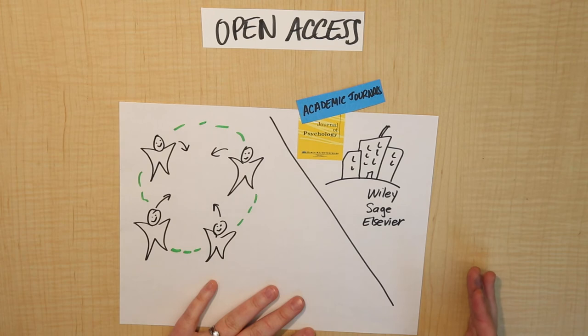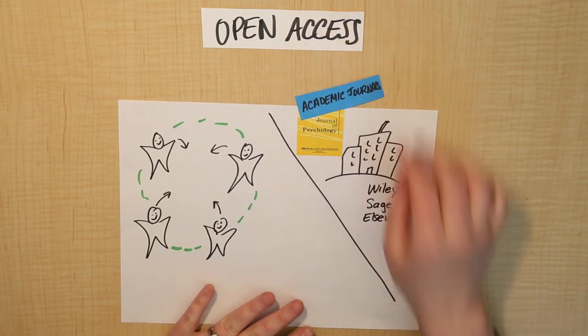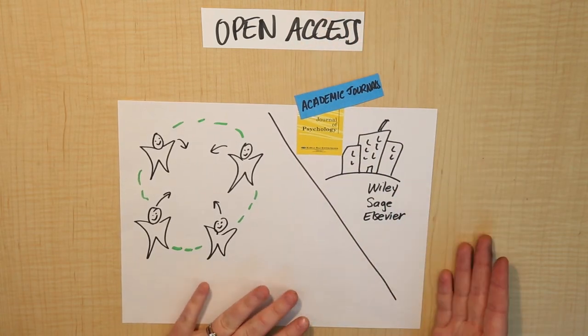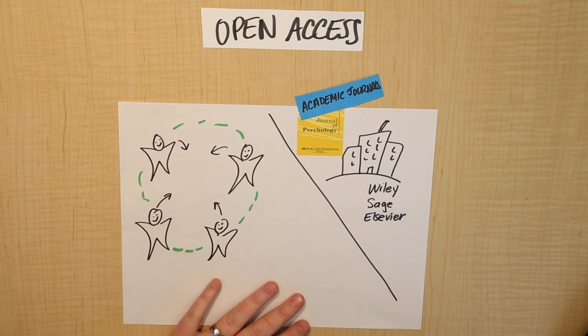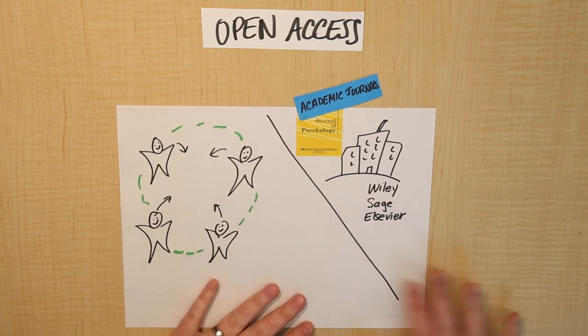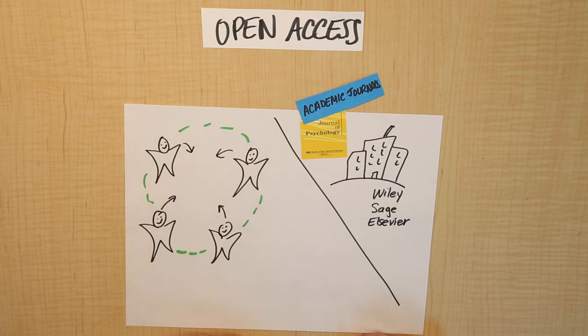So I'll take you onto the computer and I'll show you some different examples of places where you can go to find open access journals that are not part of this traditional publishing model.